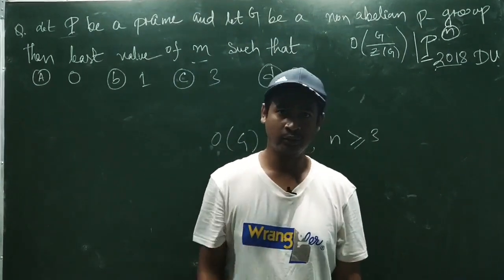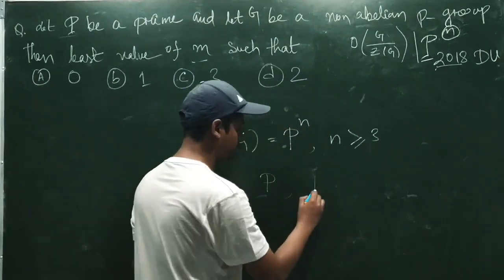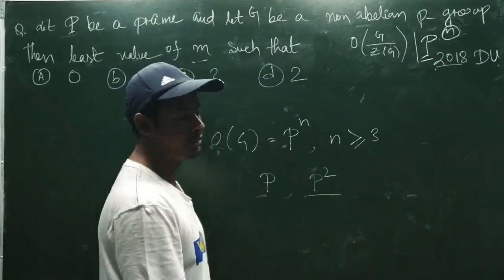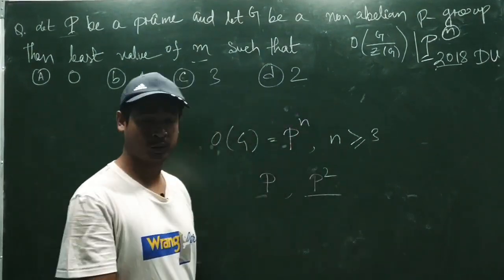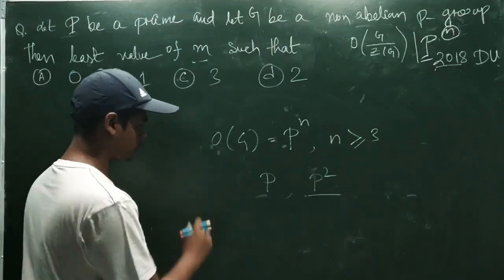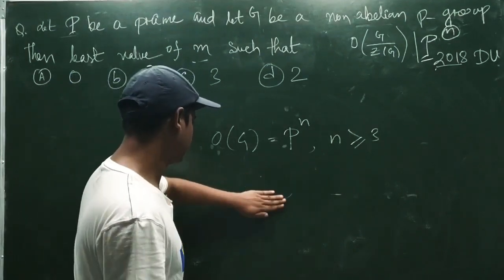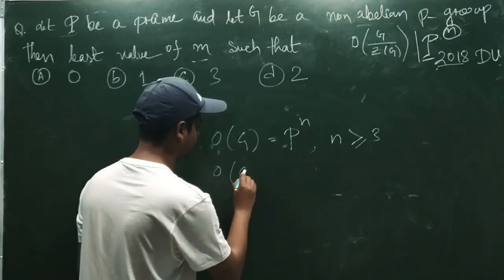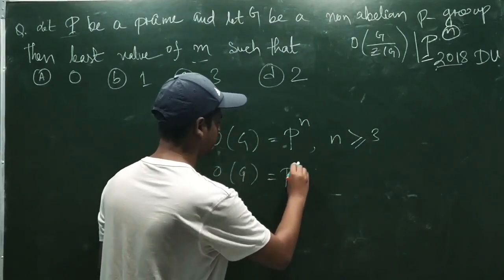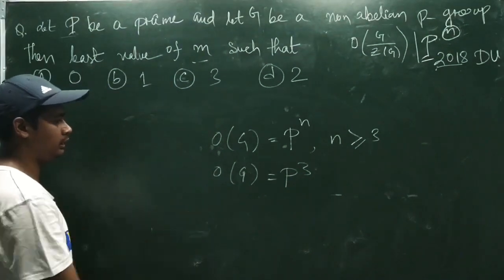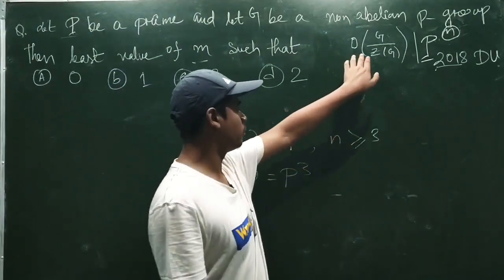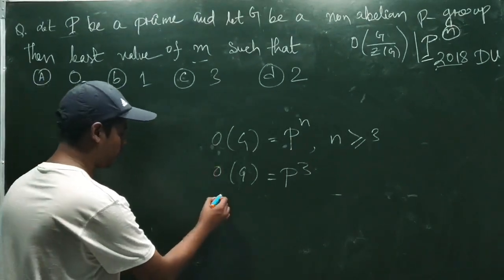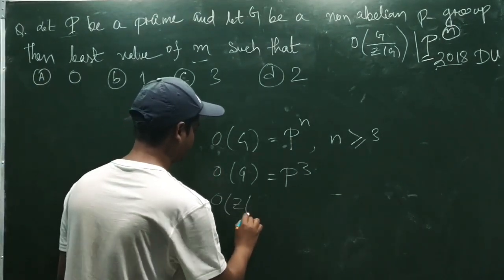We know if the order of the group is prime then it will be abelian, and similarly groups of order P squared are also abelian by Sylow's theorem. Since they are asking about the least value, take the order of the group equal to P to the power 3. They are asking about the order of Z by Z(Z).